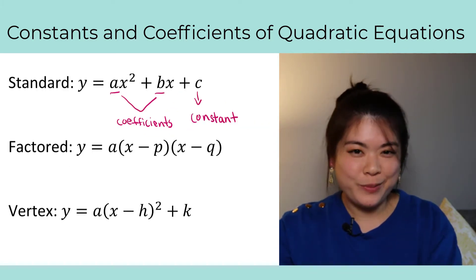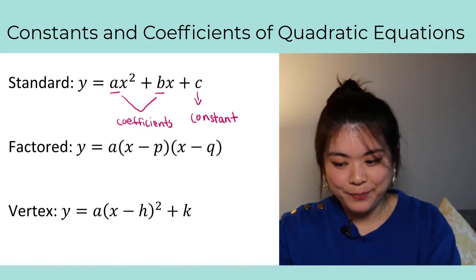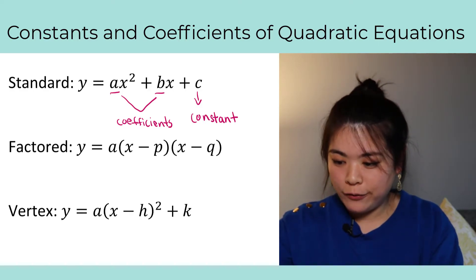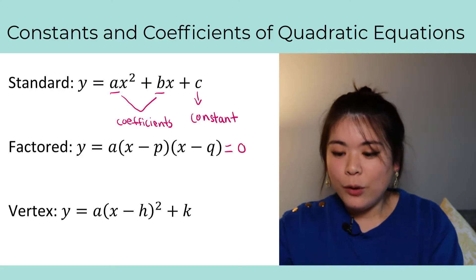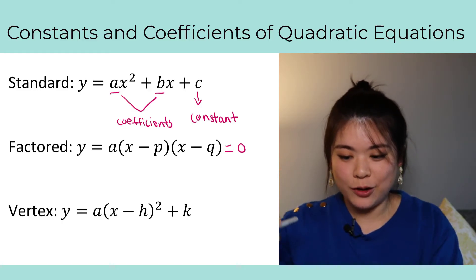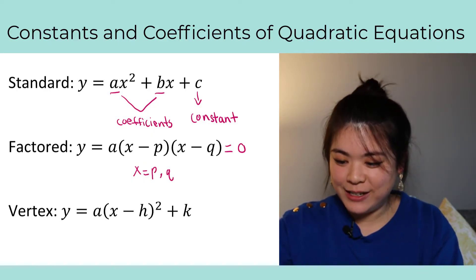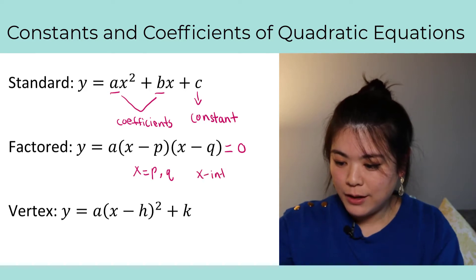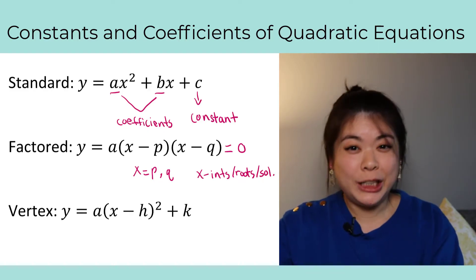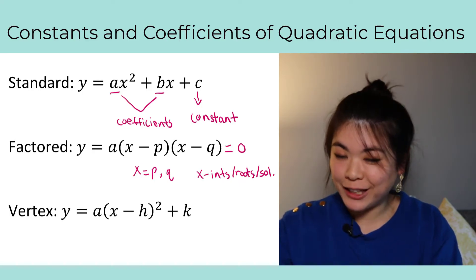Moving on to the factored form, this is everybody's favorite. The factored form is y equals a times parentheses x minus p times x minus q. So when do you use the factored form? Well, if we solve the factored form and set it to zero, then we get the roots, solutions, or x-intercepts of this quadratic.